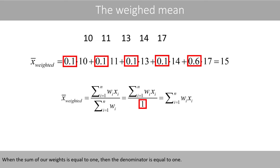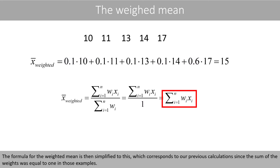When the sum of our weights is equal to 1, then the denominator is equal to 1. The formula for the weighted mean is then simplified, which corresponds to our previous calculations since the sum of the weights was equal to 1 in those examples.